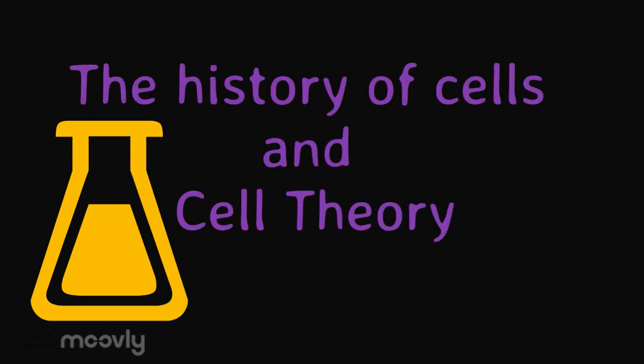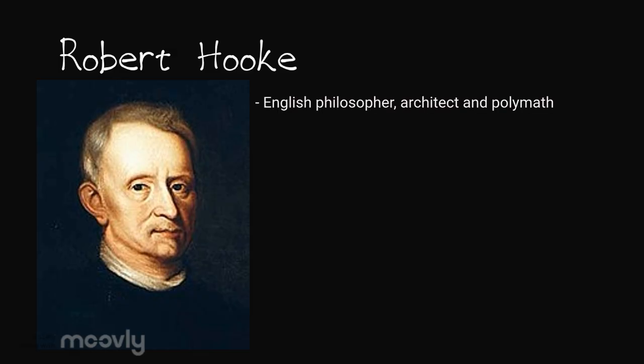This is going to be a brief overview of the history of cells and cell theory. Robert Hooke was an English philosopher, architect, and polymath — that means he studied many areas and drew from several fields of knowledge. He lived from 1635 to 1703 and was very well known for his many significant observations.